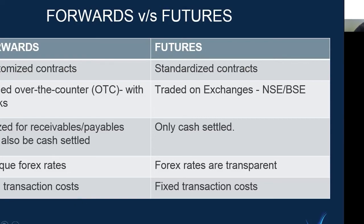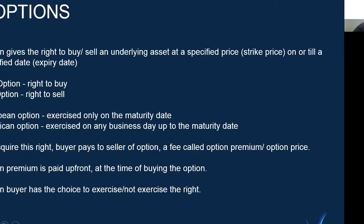Let's move on to the third tool, the options contract. An options contract gives the buyer the right to buy or sell an underlying asset at a specified price known as the strike price, on or till a specified date known as the expiry date. Please note that options give the right and not the obligation to buy or sell the underlying asset. There are two types of options: options with the right to buy are known as call options, while options with the right to sell are known as put options.